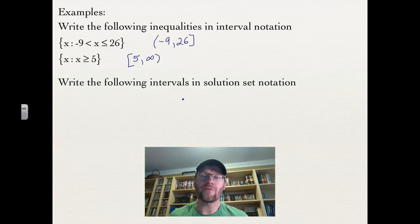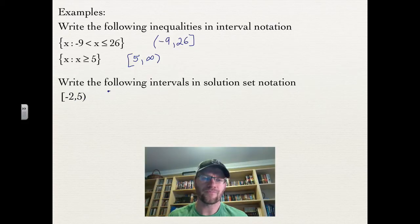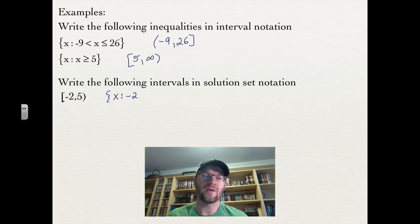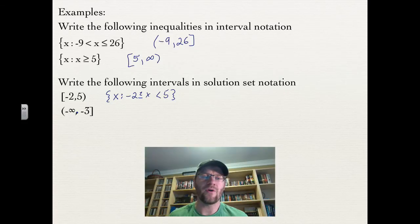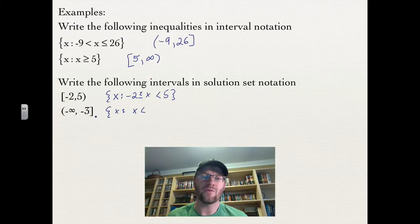Now write the following intervals in solution set notation — going backwards. For negative 2 to 5 with a square bracket at negative 2, we use squiggly brackets with a colon: x such that x is greater than or equal to negative 2 — inclusive because of the square bracket — all the way to 5. For the second one, negative infinity to negative 3 with a square bracket, we write x is less than or equal to negative 3, using an equal sign because of the square bracket.